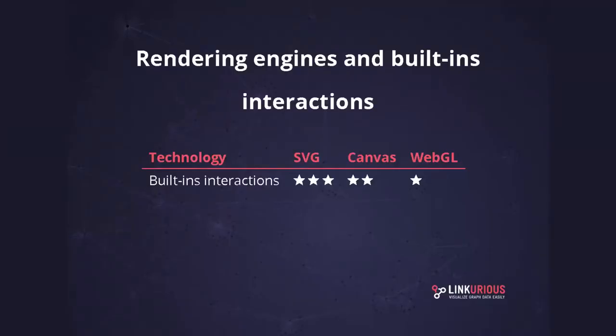To put it in a nutshell: built-in interactions with SVG are right out of the box — what I've just explained you don't have to do in SVG because the browser takes care of it, which is wonderful, but you can't show as many things as you want. For Canvas you have to implement it yourself, but it's quite easy. In WebGL you have to do it and it gets harder to implement. That's why we have this comparison table.